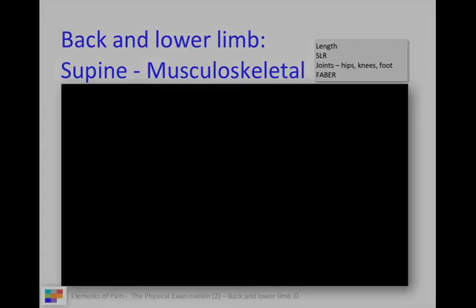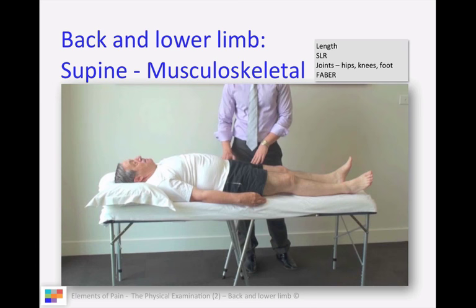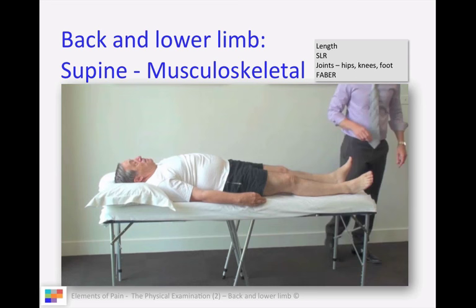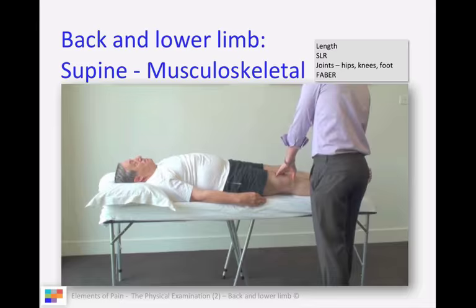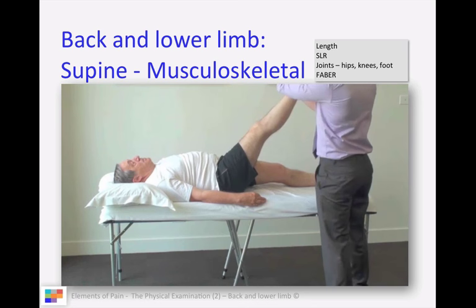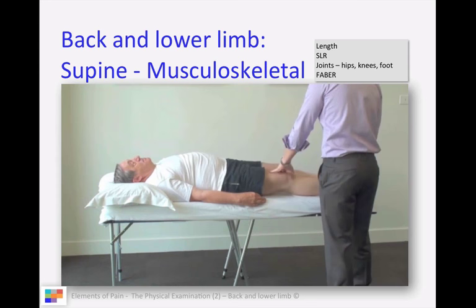Now we move on to the bulk of our examination: the supine examination. Musculoskeletal leg length discrepancy - ASIS to the medial malleolus - may be a cause for gait abnormalities and mechanical back pain. Then the straight leg raise test: start with the non-painful side, talk to your patient, look at your patient. Ankle dorsiflexion makes it worse, and then reduced by knee flexion.